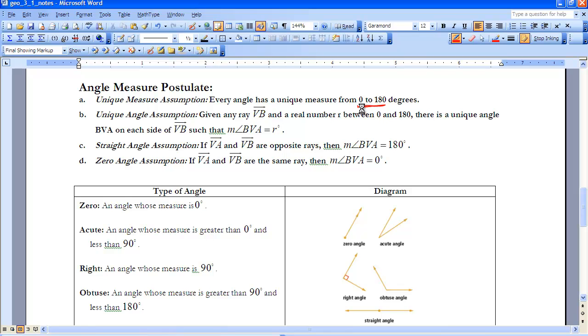Unique angle assumption. Given any ray, here in this case, ray VB, and any real number R between 0 and 180 degrees, there is a unique angle BVA on each side of ray VB such that the measure of BVA is equal to R degrees. So what does that mean? If I have ray VB here, that means that I could have a ray going in this direction and call it VA, and that could give me a unique measure of angle BVA, and it would have its own measurement, or I could go this direction off of the ray, and that would also have a unique measure.